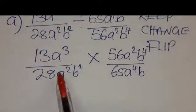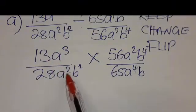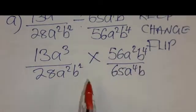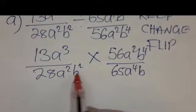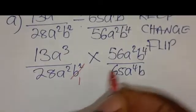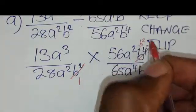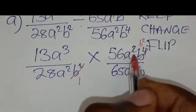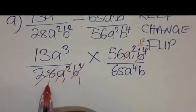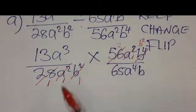At this stage, we can cancel what is common by cross-cancelling. Here we have B squared, and there we have B to the power 4. B squared into B squared is 1; B squared into B to the power 4 leaves B squared. Then A squared into A squared is 1. Then 28 into 28 is 1, and 28 into 56 is 2. So we are done cross-cancelling along this diagonal.